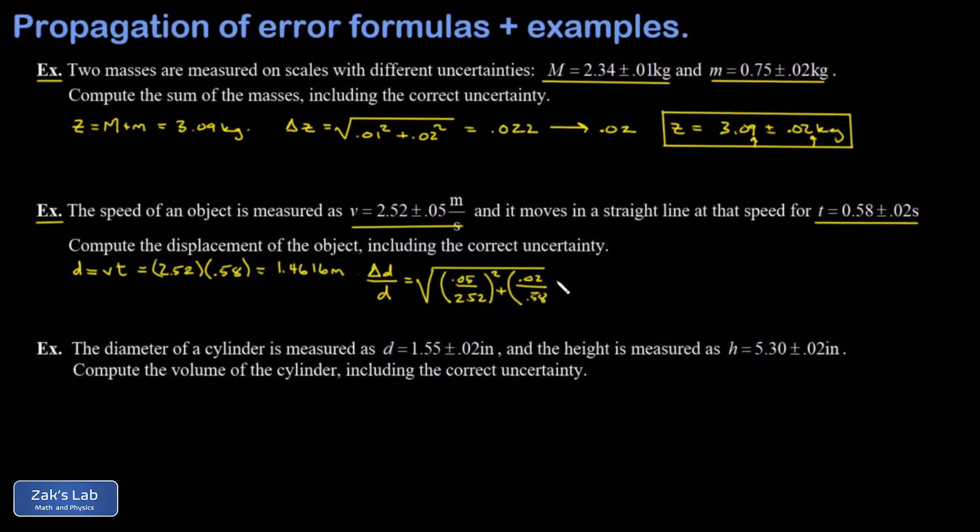And in the second term, I have a 0.02 for the uncertainty in the time divided by the 0.58 for the value of the time. When I run the numbers on this, I get 0.0398.